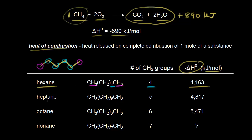Notice what happens as we move on to heptane. We're increasing by one CH2 group — going from four CH2 groups to five CH2 groups. We get an increase in the heat of combustion, so more heat is released. That makes sense: if you increase the number of carbons, you increase the heat of combustion. Increasing by one CH2 group gives a difference of 654 kilojoules, since 4,817 minus 4,163 equals 654 kilojoules.